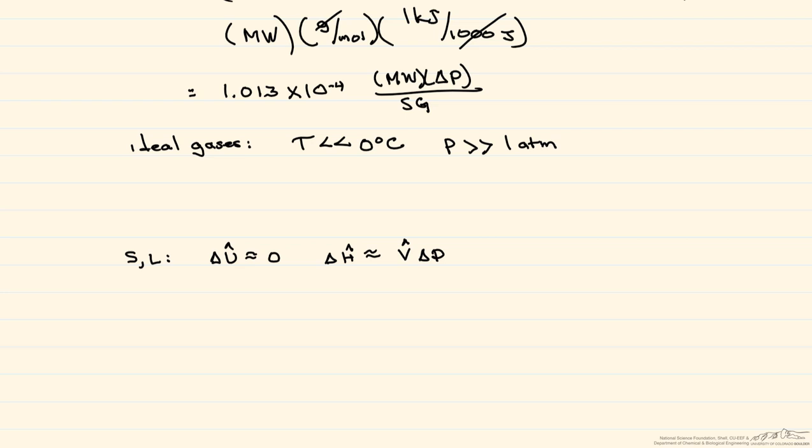For an ideal gas, as I showed you before, both delta U and delta H are approximately equal to zero.